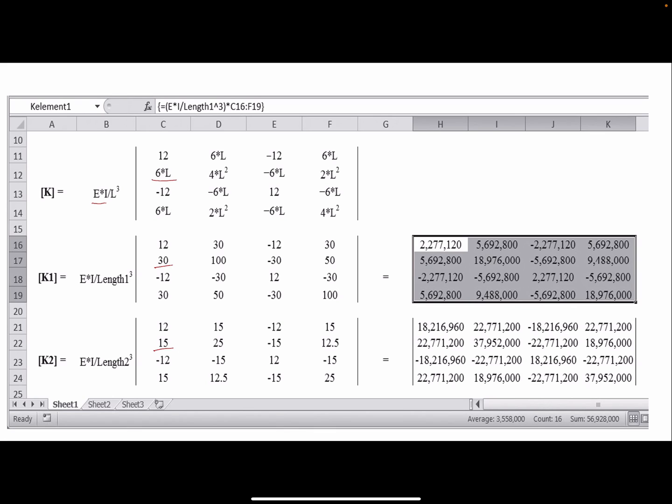Here I'm showing you doing it in Excel. You have the stiffness matrix for the first element and the stiffness matrix for the second element. These two stiffness matrices are in local coordinates, that's why they are 4 by 4, or they are local stiffness matrices.